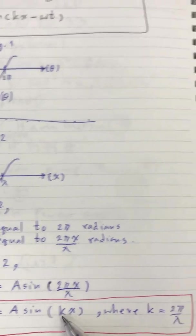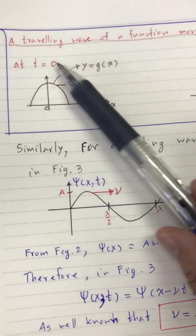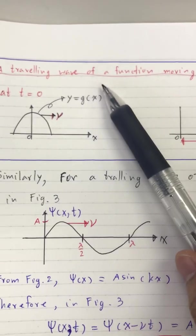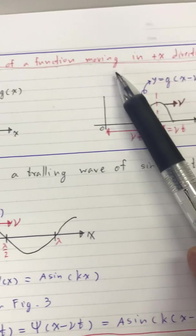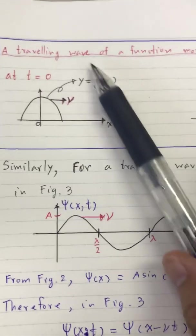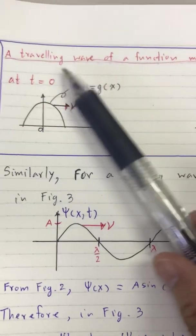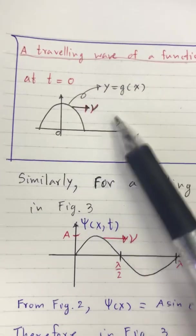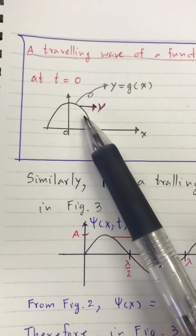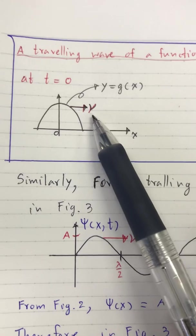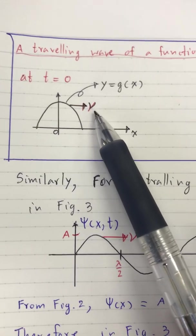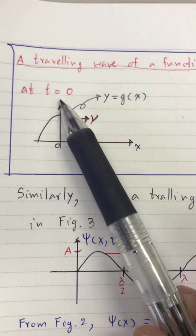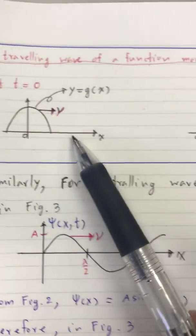Now we consider Feature 3 — the traveling wave. For any function g(x) moving in the positive x direction with velocity v, at time zero the function is simply g(x).